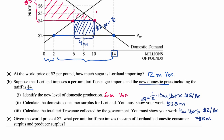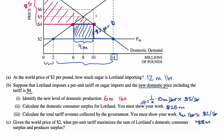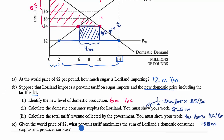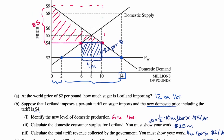Part C: given the world price of $2, what per-unit tariff maximizes the sum of Loreland's domestic consumer surplus and producer surplus? You might be tempted to try out a bunch of tariffs, but the key insight is that any tariff is going to reduce your total economic surplus. So the ideal per-unit tariff is zero dollars per unit. Without any tariff, at the world price, you have a small domestic producer surplus but a large consumer surplus — both triangles together make up the total economic surplus.